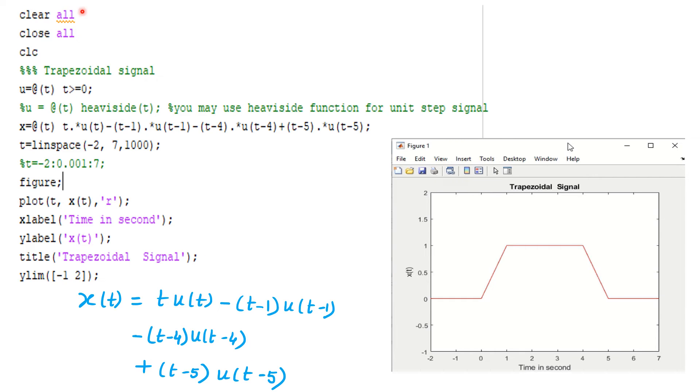As usual we will start with these three lines: clear all, close all, and clc. And then you see here we will consider u, so u is the step signal, so we can write as this anonymous function @t, and t greater than or equal to zero, that's all.